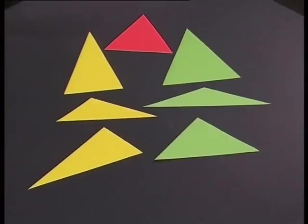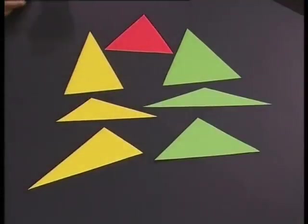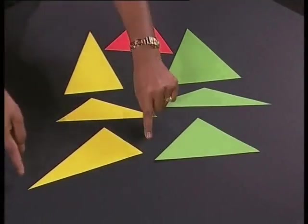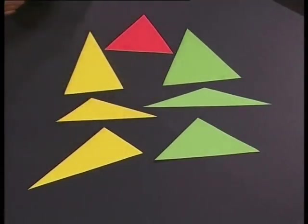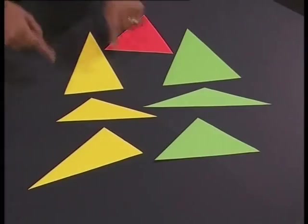Let's quickly identify them. Here we have all the scalene triangles. Remember scalene has no equal sides. Here we have a right angled scalene triangle, an obtuse angled scalene triangle, and an acute angled scalene triangle.